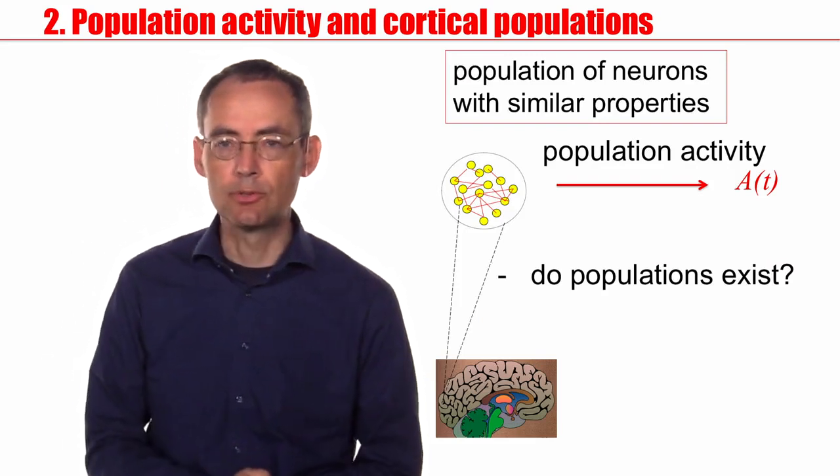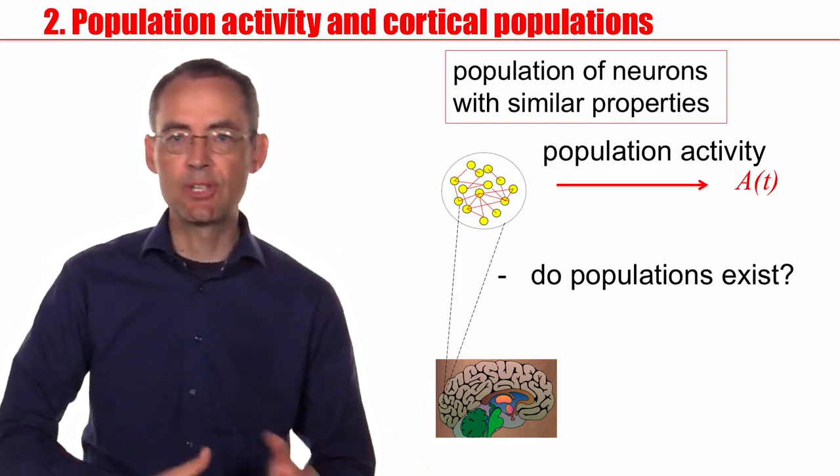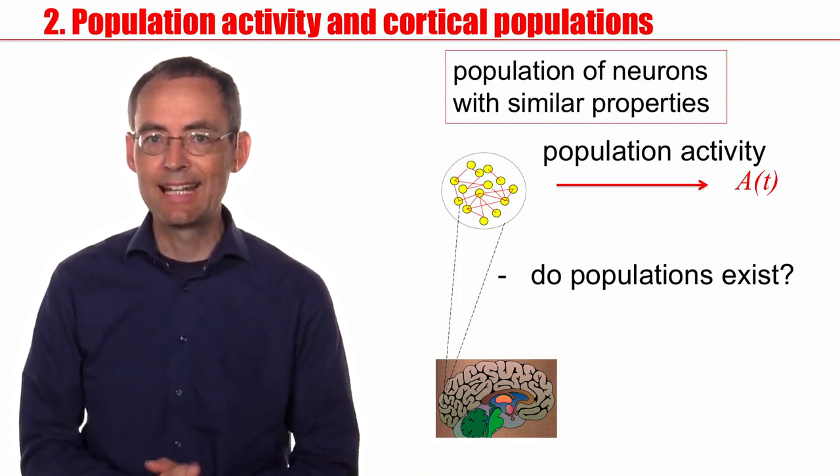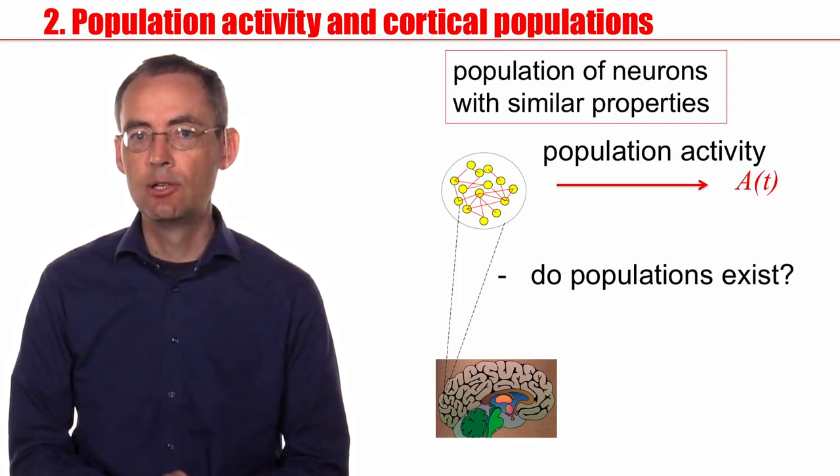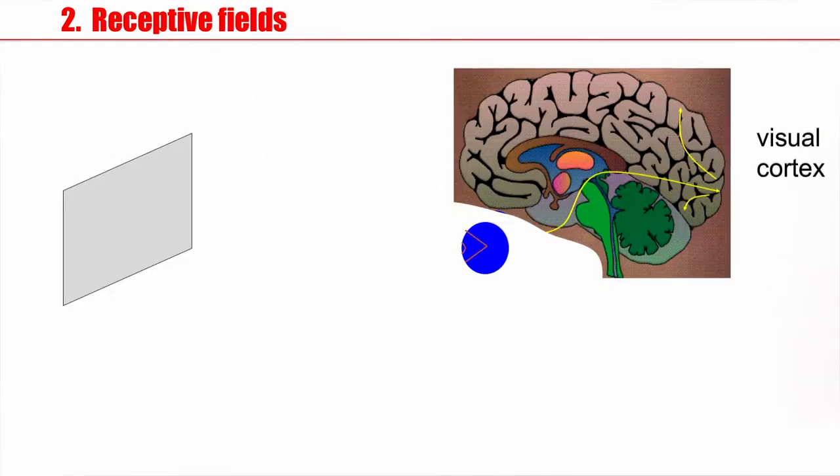Those who have heard about visual cortex and columns and receptive fields before can skip this section and go directly to section 3. For the others, please stay tuned.